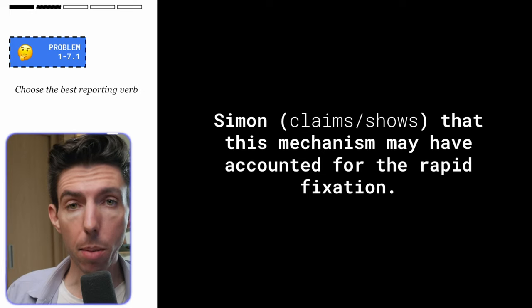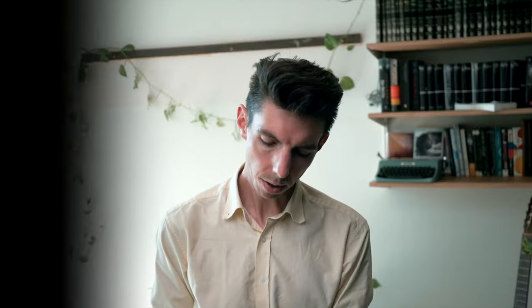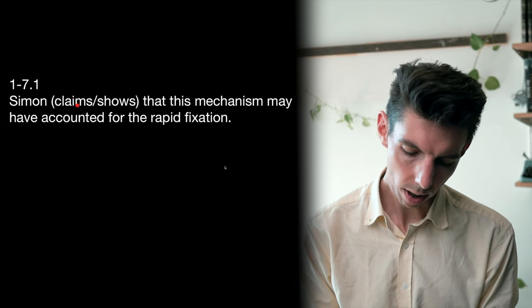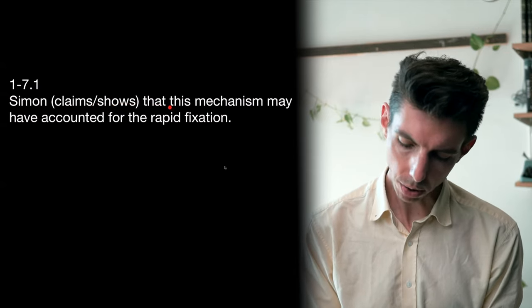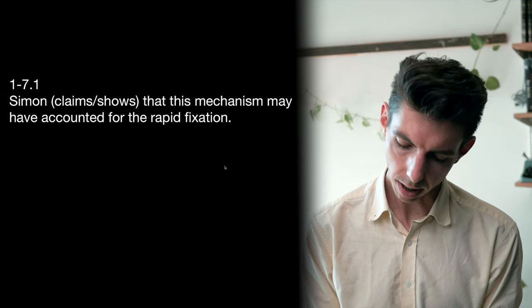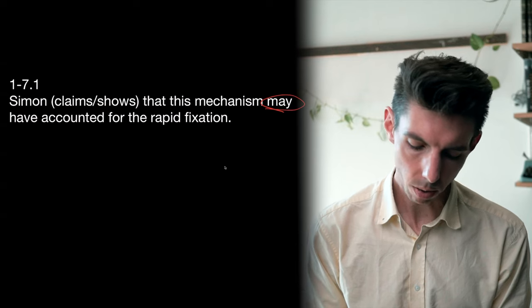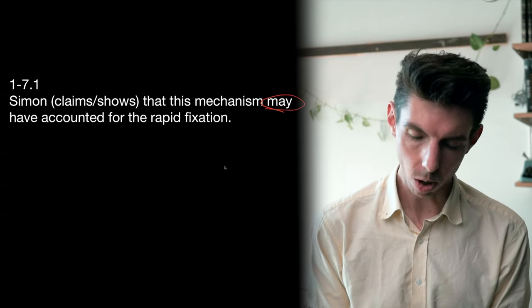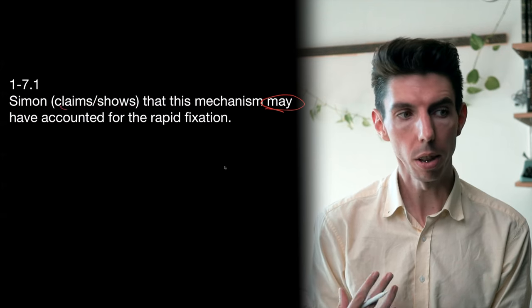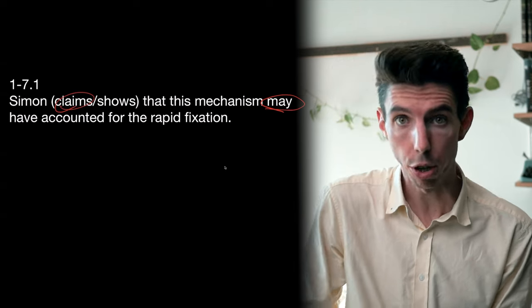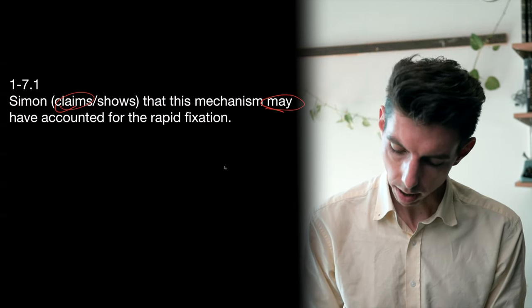Let's test this out. Based on those three principles, choose the most appropriate reporting verb. Our options here are 'claim' and 'show.' Both can take a finite noun clause as a complement, so how do we choose? I notice this clause contains the auxiliary verb of uncertainty — 'may have accounted.' We're not too sure. At the level of semantics, the more appropriate one is 'claim.' When you claim something, it can be true or false. When you show something, you're showing it's true. Claiming is an idea that people can agree or disagree with.